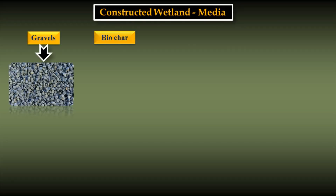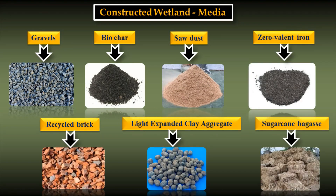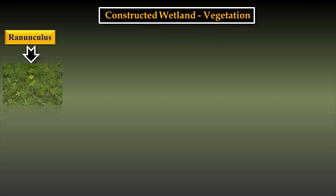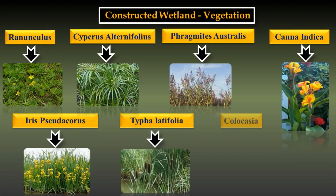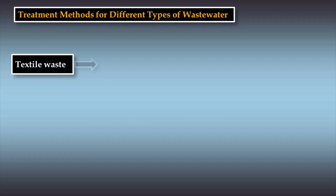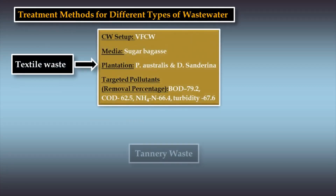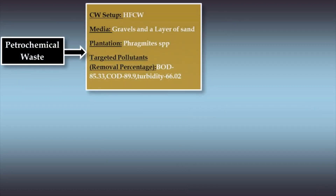Different types of media can be used in the wetland to improve its efficiency. Various types of vegetation are planted in constructed wetlands. Of all of them, Phragmites Australis and Typhalatifolia show high removal efficiency. The removal efficiency is identified by treating various types of wastewater using different design setups, media and plantation.